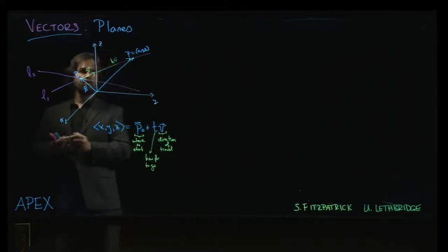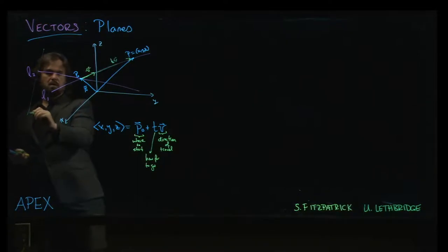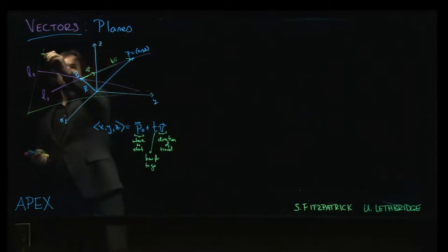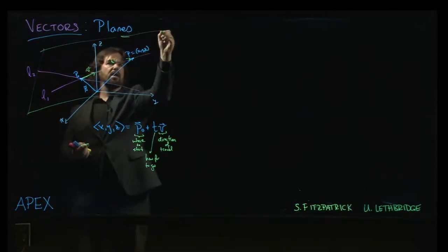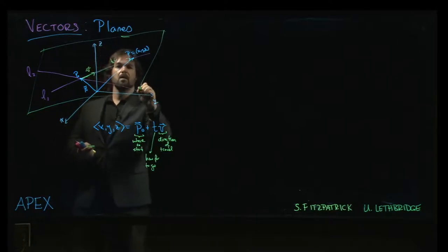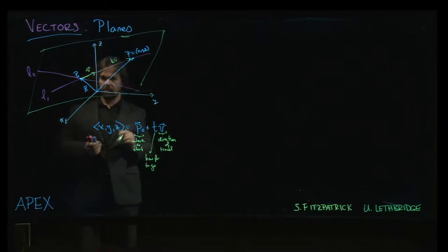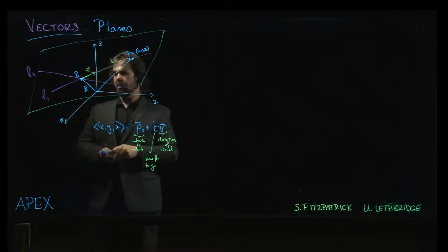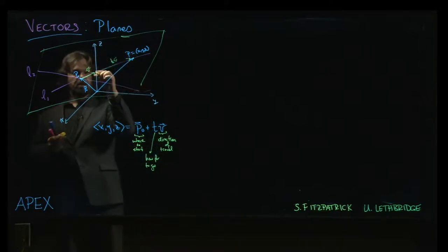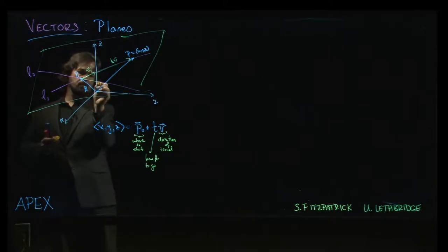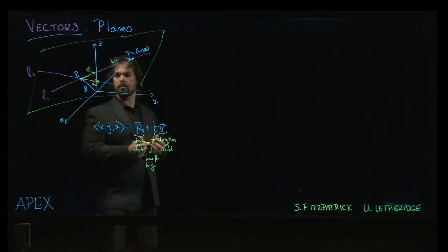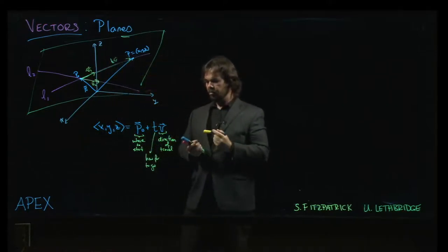So, now you can sort of visualize, at least I hope you can, that there's a plane that contains both of those lines. So, those two lines, they're sitting inside of a plane. And so, now we have not just one direction vector v1, we have another, let's say, v2.